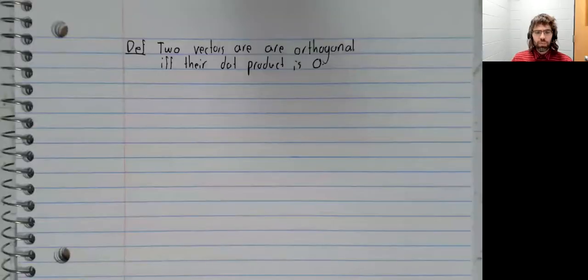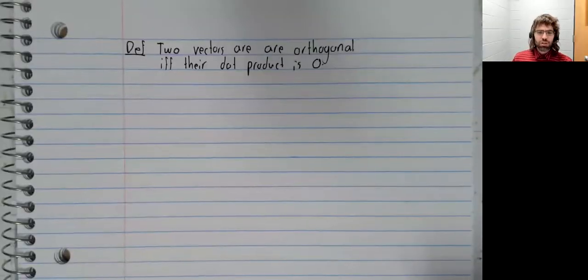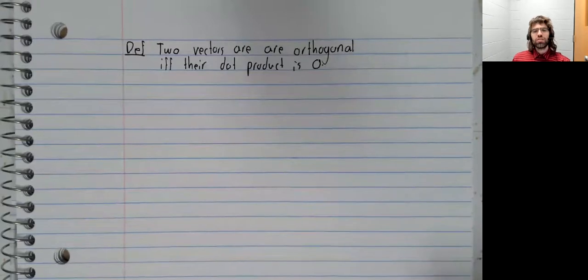We've talked about orthogonal vectors. Remember that the intuition behind orthogonality is that the vectors are meeting at a right angle, and two vectors are orthogonal if their dot product is zero.